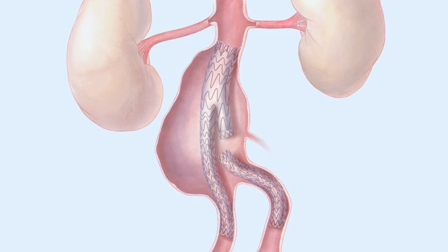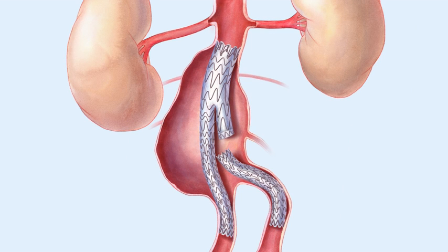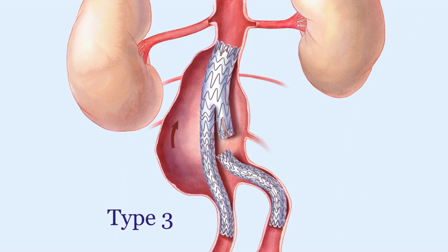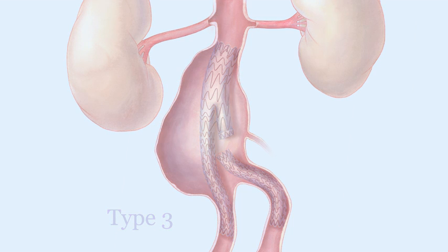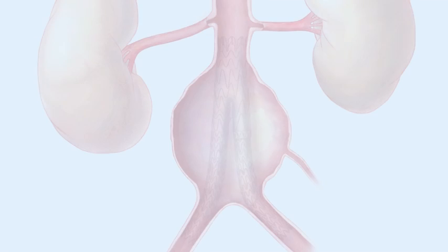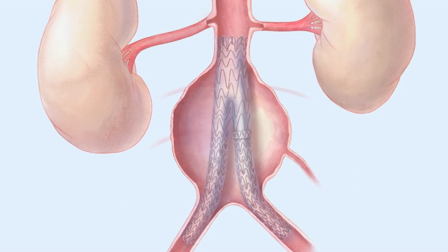The remaining three types of endoleaks occur more rarely. Type 3 leaks occur when there is a gap between the main body of the stent and its smaller leg component, which can develop over time due to progressive angulation. These gaps are closed with glue, the interposition of another stent, or the dilation of the existing stent to improve its position. Type 3 leaks are seen less frequently due to newer generation stent graft materials.